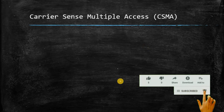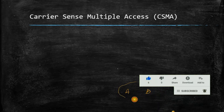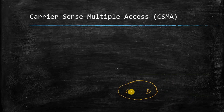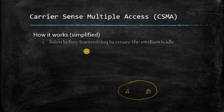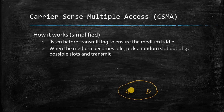To understand the working of this protocol, we will take two nodes, node A and node B. These nodes are in the range of each other, meaning B can communicate to A and A is also in the transmission range of B. If A wants to send data to B, A will listen before transmitting to ensure the medium is idle. When the medium becomes idle, it picks a random slot out of 32 possible slots and transmits the data.